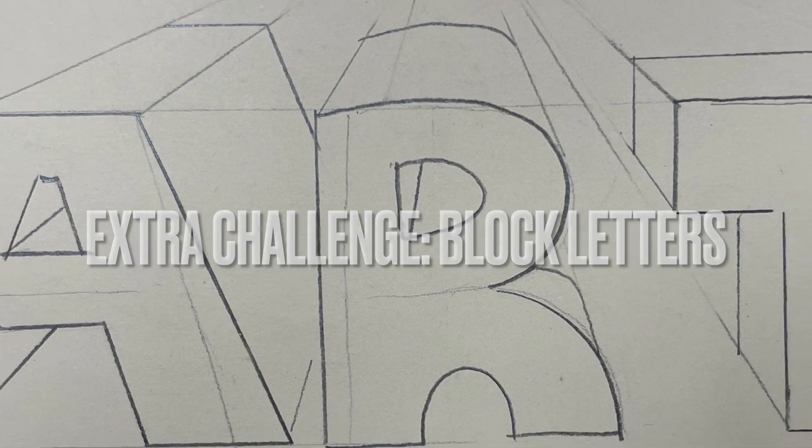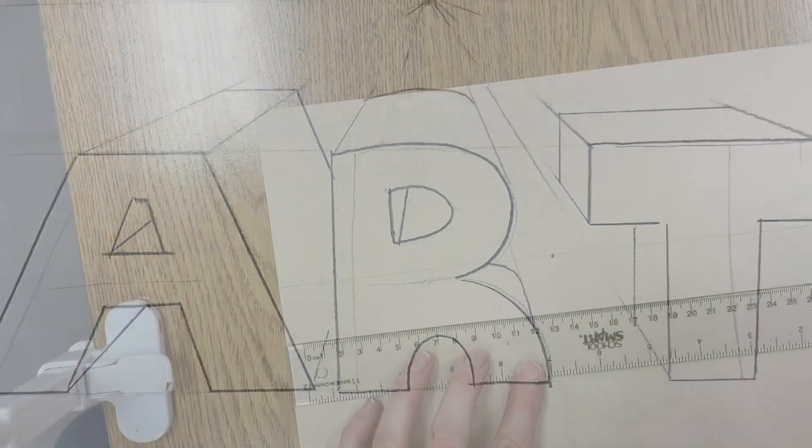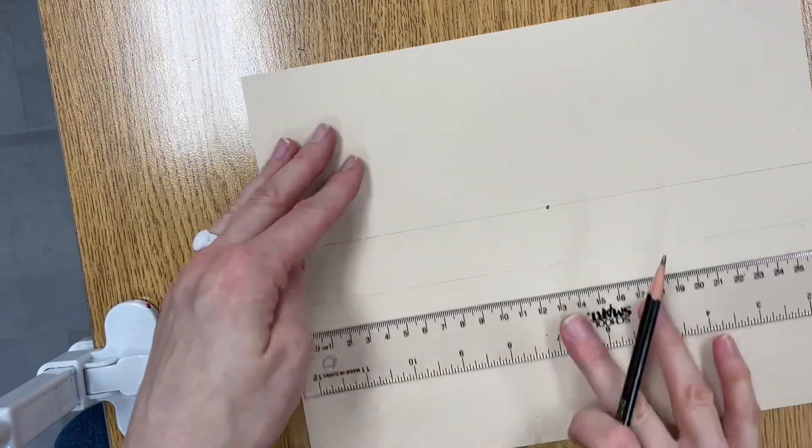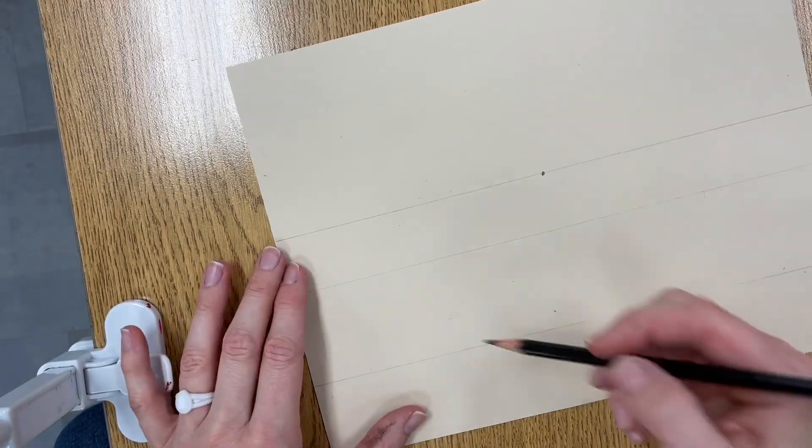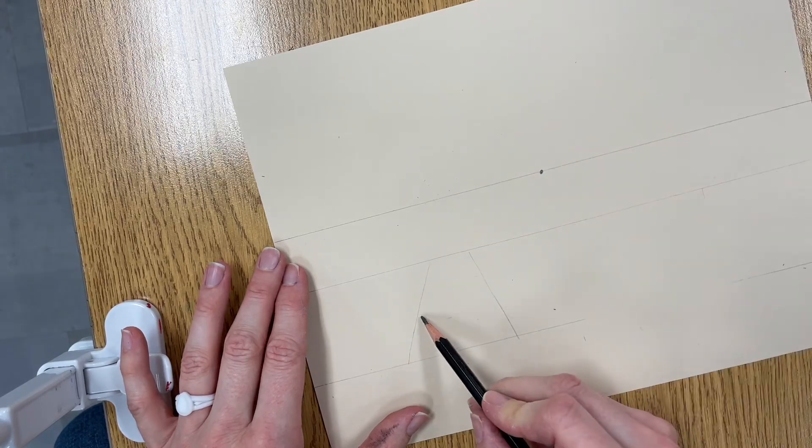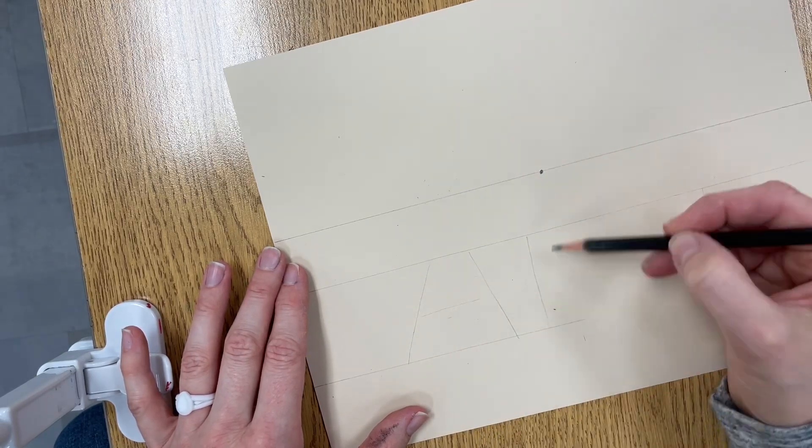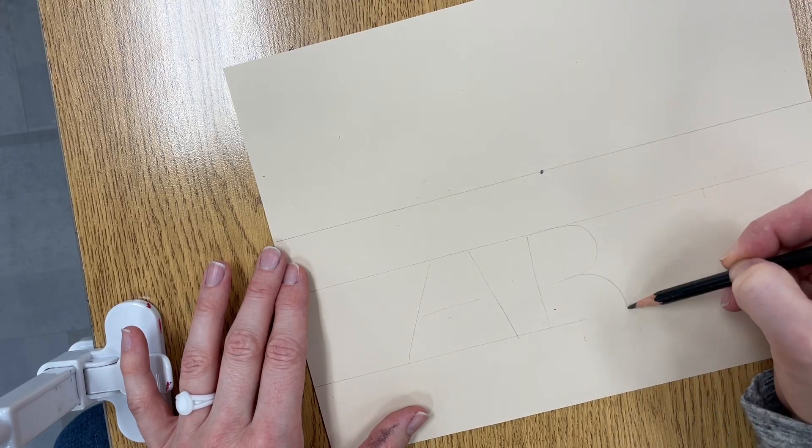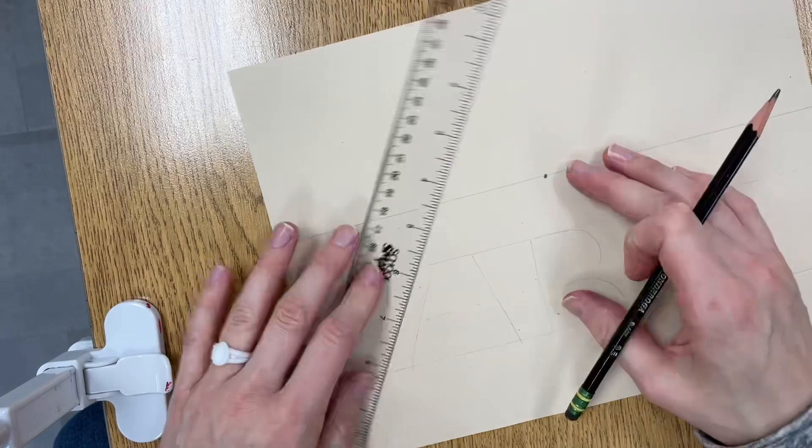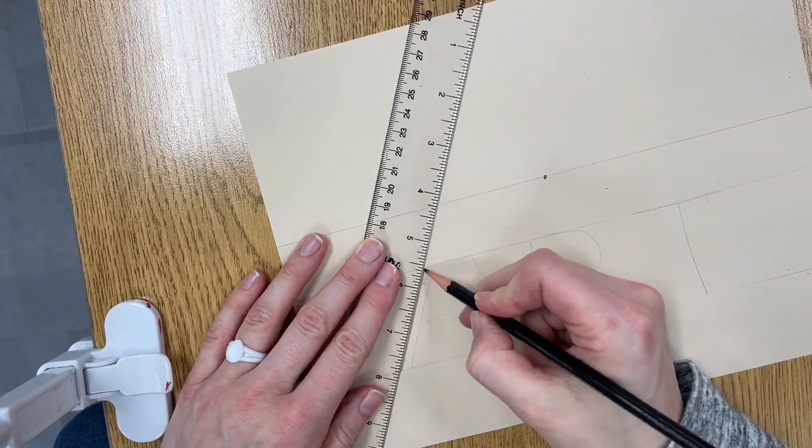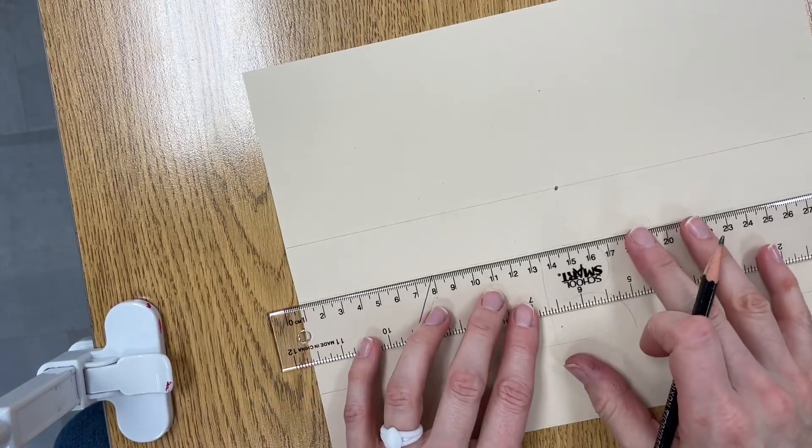As an extra challenge you could try out block letters. It's a similar process where you start out by creating a horizon line. And here I'm creating a couple lines so I know where to stop and start my letters so that they're the same height. To create block letters I just lightly sketch out a capital letter and then I'll take a ruler and create the block around it.